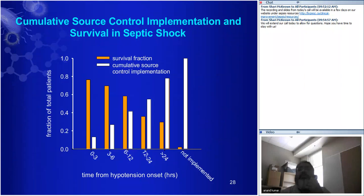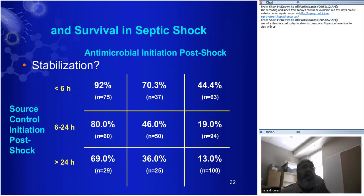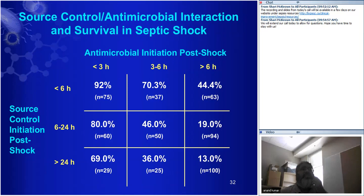Source control is just as important in terms of time to implementation as antimicrobial therapy. Our median time to source control was about 12 hours, and survival dropped with every delay. I think you should ideally be less than six hours on source control; six to 24 is where we are; greater than 24 is bad. For antimicrobials, less than three hours is the target, preferably less than one. Greater than six hours is where you don't want to be. The survival differences are remarkable: 92% survival with early treatment versus 46% and then 13%.